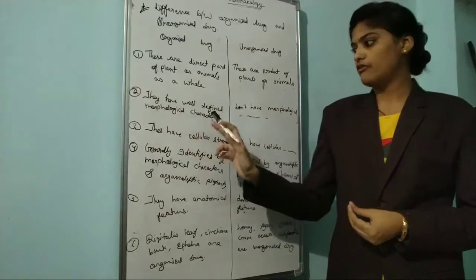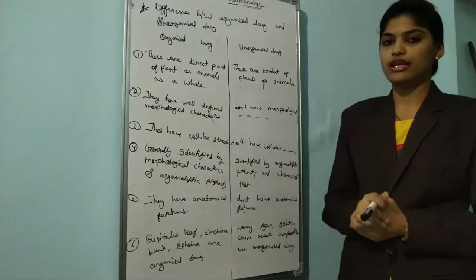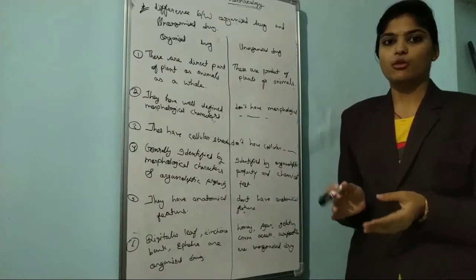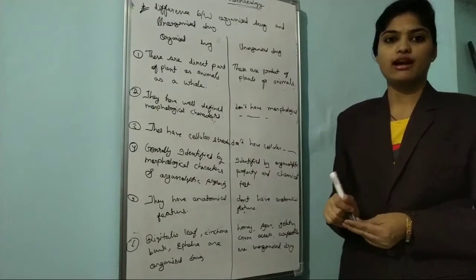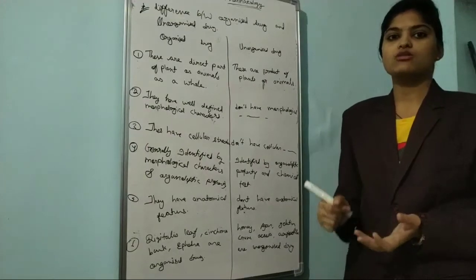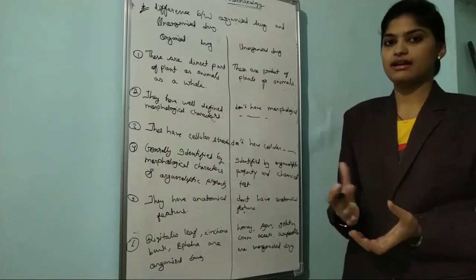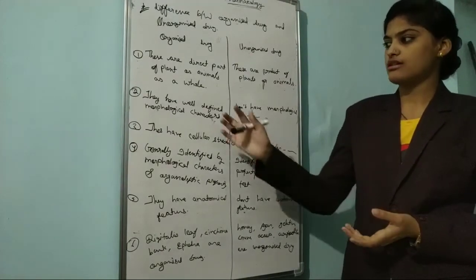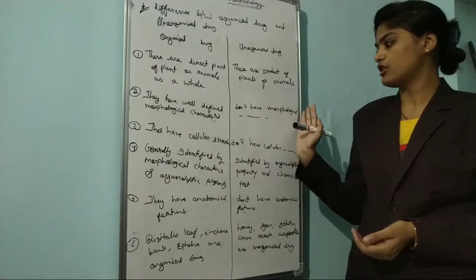Second point is they have well-defined morphological characters - morphological characters like the structure, the type, color, taste, smell, size and shape. Unorganized drugs don't have morphological characters because the product is made.